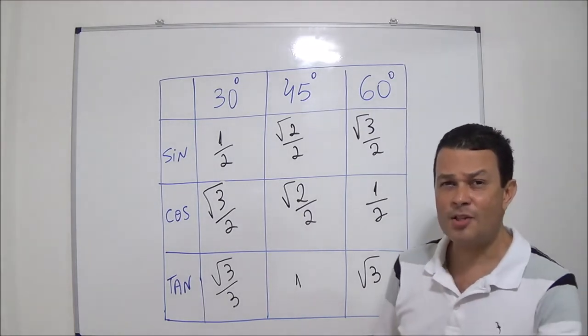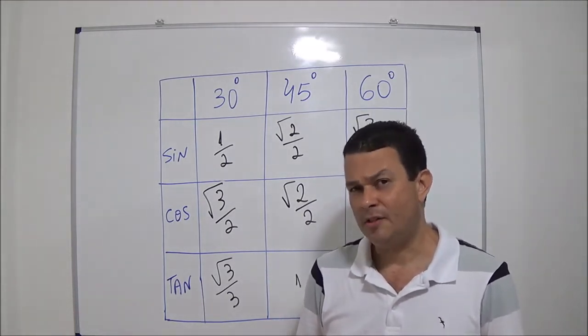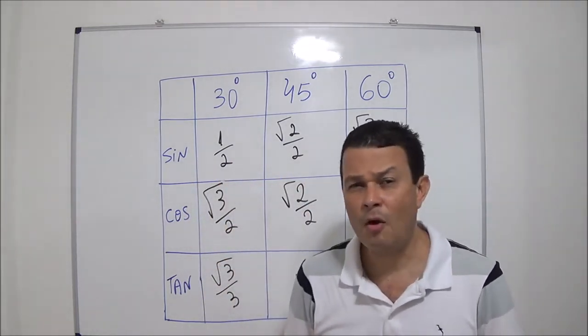Alright, if I ask you, what's sine of 60 degrees? One, two, three. Square root of three over two.